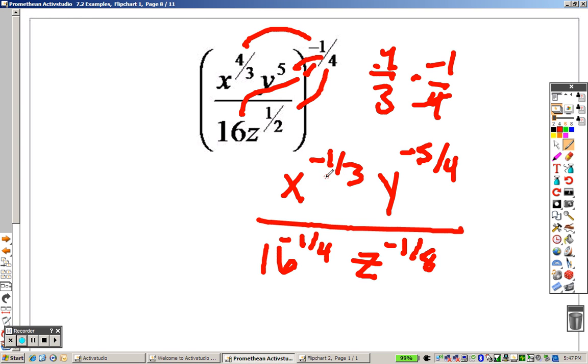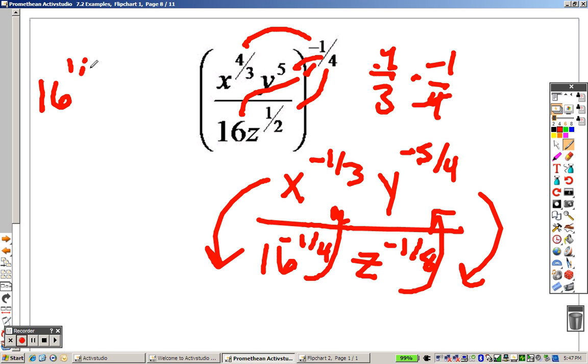So here's what happens. Every single exponent I have is negative. So I'm going to bring those two down, and I'm going to bring these two up. I'm going to flip-flop everything. So basically, this is like saying I have 16 to the 1 fourth on top. Because remember, you can't have negative exponents.